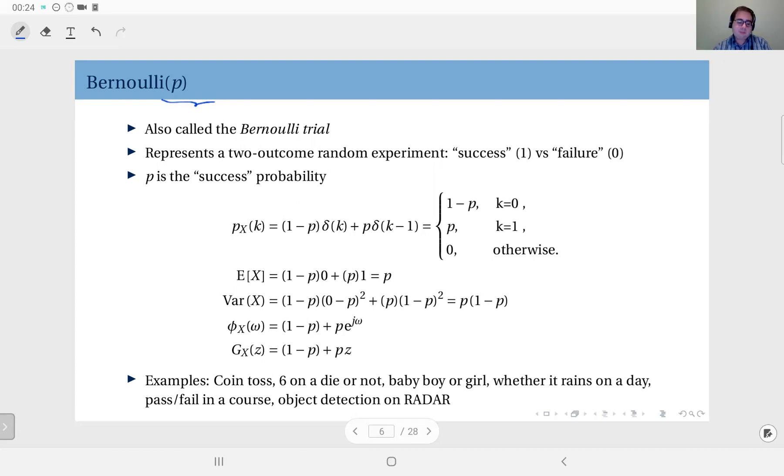So here p is the parameter of the Bernoulli distribution. When I say Bernoulli p, you should understand what I mean by that. Or for instance, if I say Bernoulli 0.3, Bernoulli 0.6, Bernoulli 0.9, Bernoulli 1.5, etc., that should mean something to you.